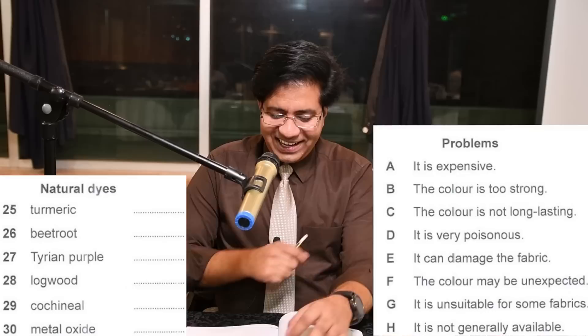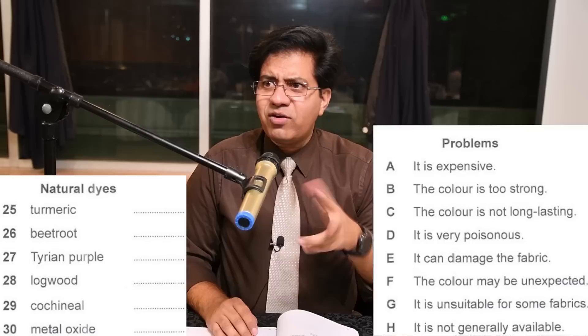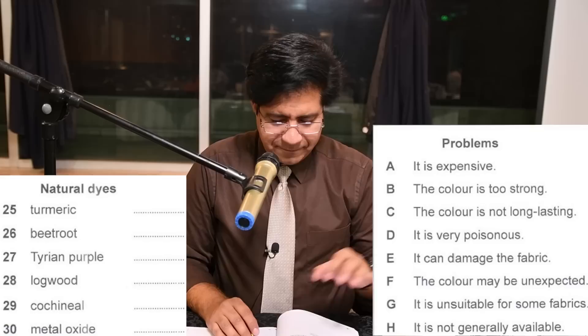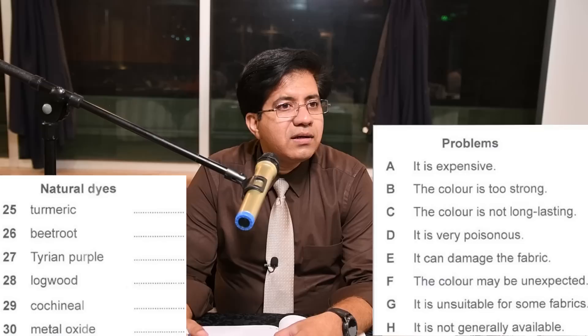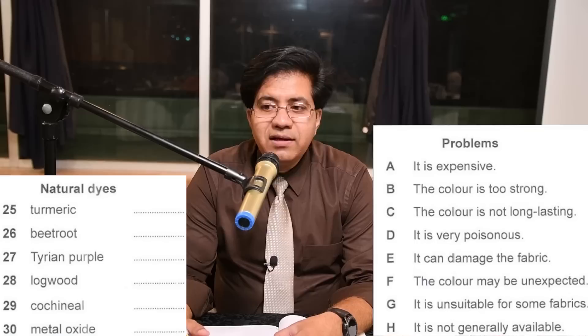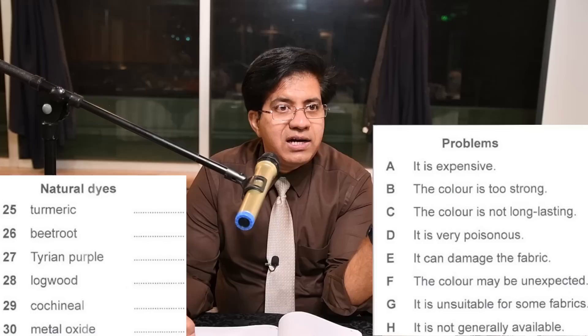Question 26: beetroot. 'I used beetroot as a dye for wool. When I chop up beetroot to eat I always end up with bright red hands, but the wool ended up just a sort of watery cream shade — disappointing.' Watery cream shade is disappointing — the color was unexpected. On the hands it's bright red, on the clothes it's a watery cream shade, so the answer is F.